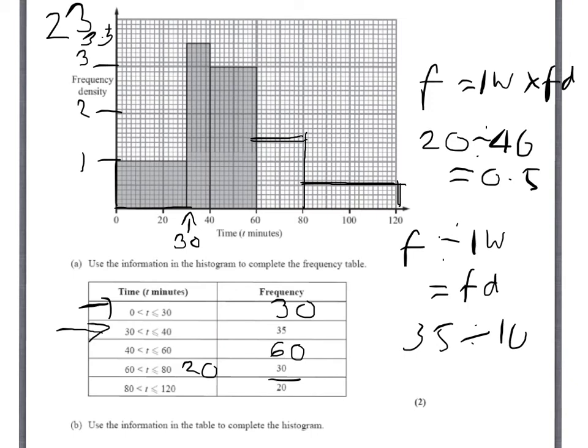So for the 40 to 60, we know that we have a 60. Sorry, we've done the 40 to 60. The 60 to 80, we have a width of 20 times a frequency density. So 30 divided by 20 gives me a frequency density of 1.5. So 30 divided by 20 gives me the 1.5. So I line this up here at 1.5.